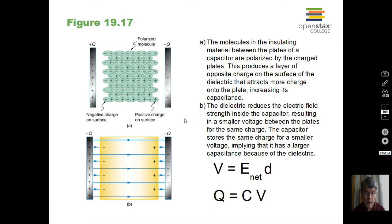So there's a way of making the capacitance larger. One of those ways is to put something called dielectric in between the two plates. Dielectric is an insulator. It's an insulator that polarizes in the presence of an electric field.